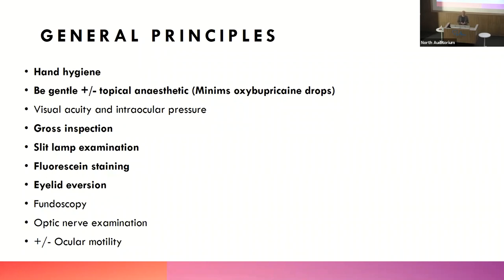With fluorescein staining, in a corneal abrasion you're expecting a big green patch on the eye. Even in conjunctivitis you can get little green patches — punctate staining — where there is some corneal involvement.